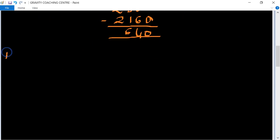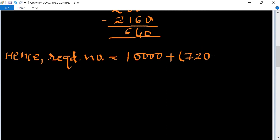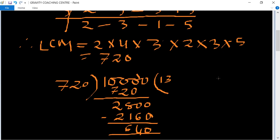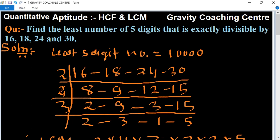So hence the required number is, hence the required number equal to 10,000 plus 80, equal to 10,080, which is the required answer. And you can also find the LCM by shortcut.